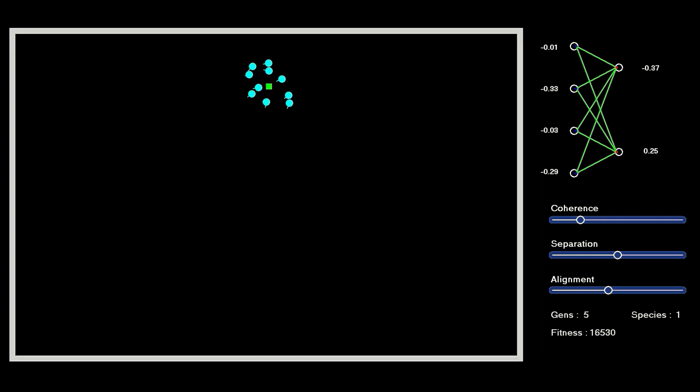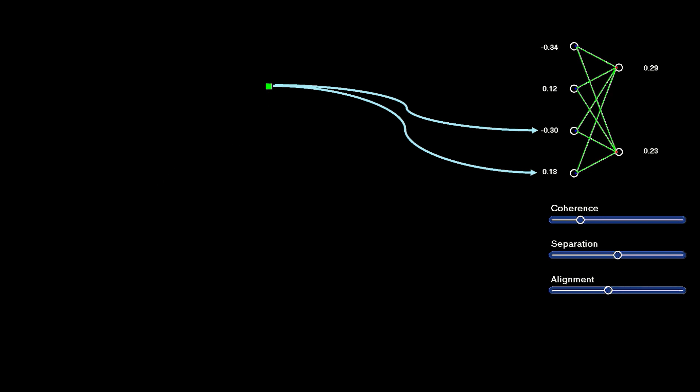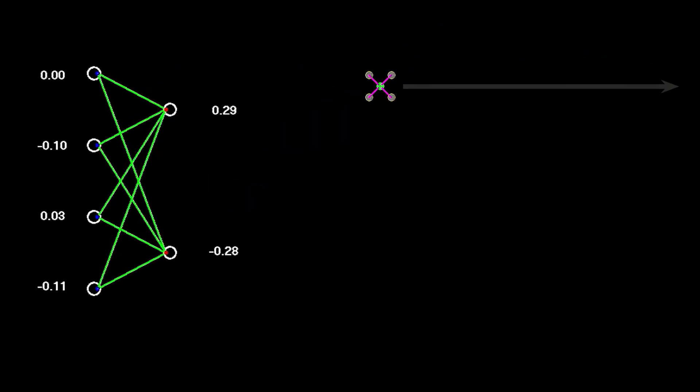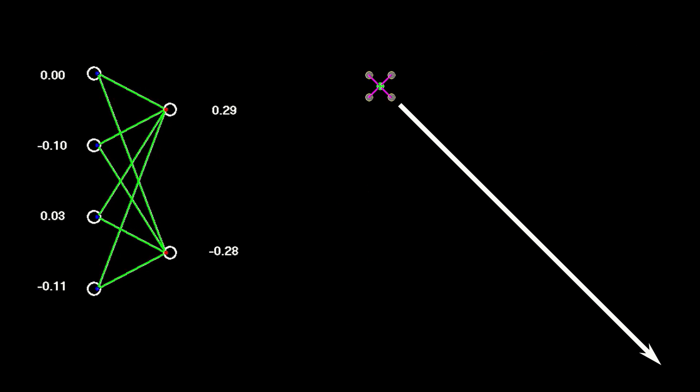The other input is the average x and y coordinates of the Boyd's flock, scaled to the same range. For the output, I'm going to use two nodes. They'll give me the delta x and y for the drone's next position. There'll be a number between minus 1 and 1, which I'll then multiply by the largest step I want the drone to take along either axis.